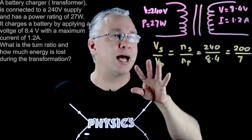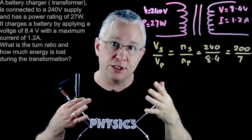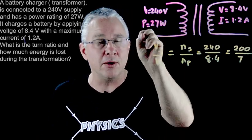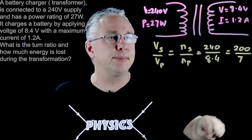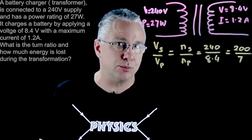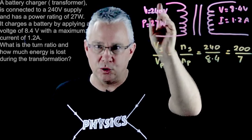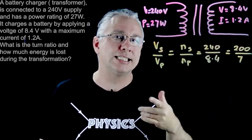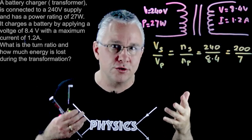Now the second part of the question says, well how much energy is lost? A transformer that is consistent with the conservation of energy means that the power input should ideally be equal to the power output. So in other words, if I work out the power here, which I'm actually given in this case, and I work out the power here, I should get exactly the same value, but I don't.